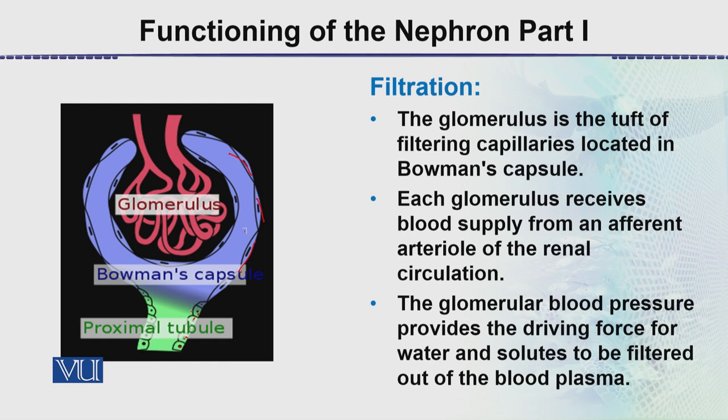The glomerulus is the tuft of filtering capillaries located in the Bowman's capsule. Each glomerulus receives blood supply from the afferent arterioles of the renal circulation. This artery feeds into the network that we call the glomerulus.